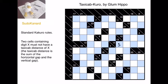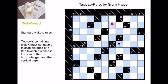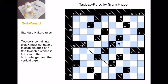So if we put a 5 here, then counting 1, 2, 3, 4, 5 — this cell could not be a 5. And there's a kind of region surrounding the cell at distance 5, and all of these cells are forbidden from containing a 5.